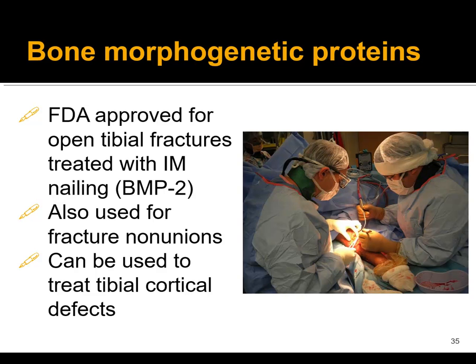BMP2 is FDA approved for open tibia fractures treated with intramedullary nails. If you have a type 3B open tibia fracture that you've nailed and you're about to do soft tissue coverage, that is the time — when it is FDA approved — to use BMP2 at the time of wound coverage and closure. Early studies showed it was helpful in those cases. It can also be used for fracture non-unions and tibial cortical defects. It has not come into very widespread use, and early excitement has been tempered by more recent papers. It is still an option, though an expensive one.